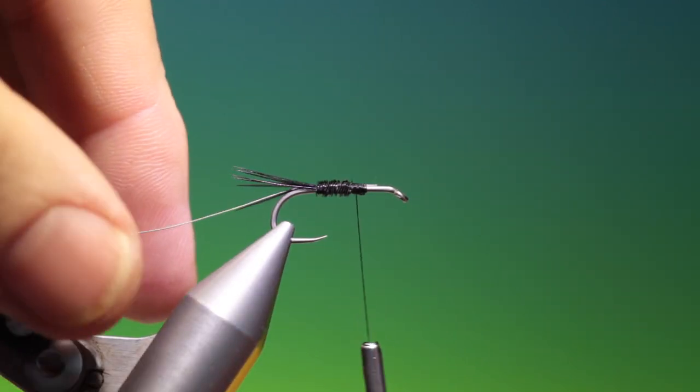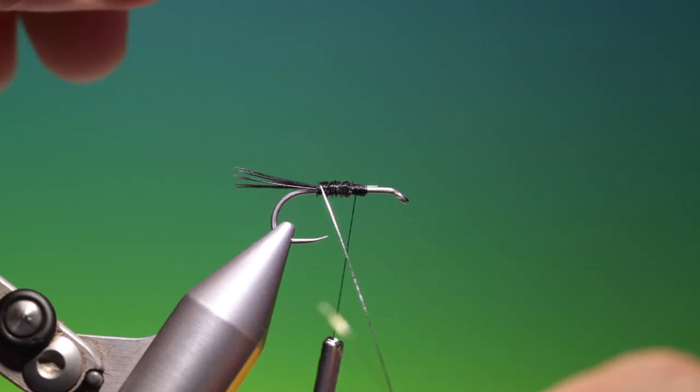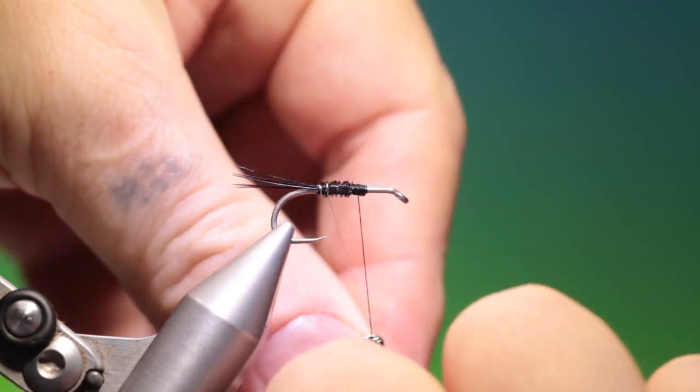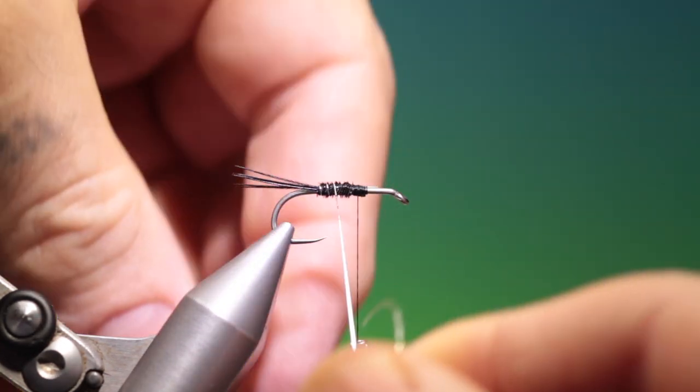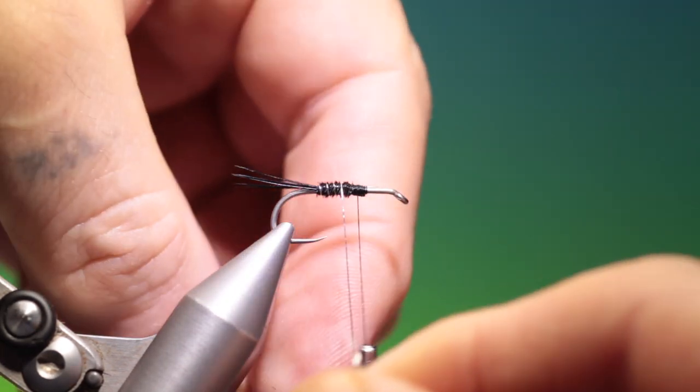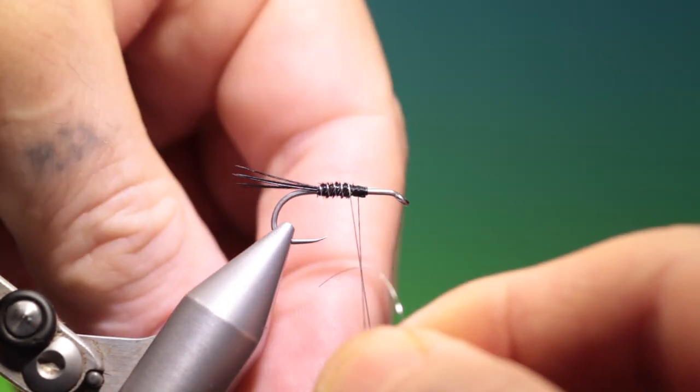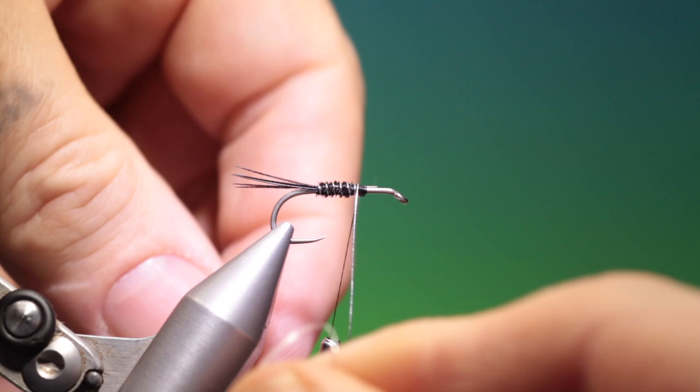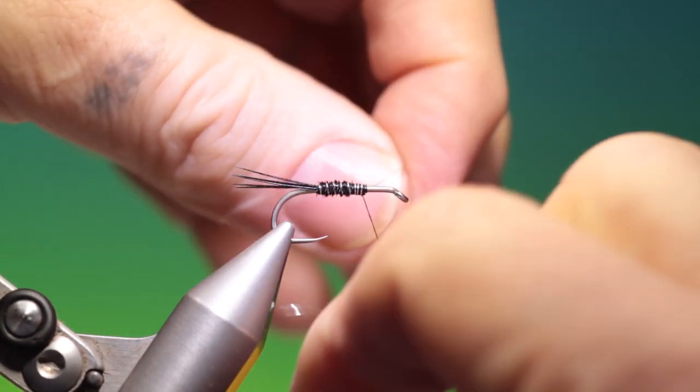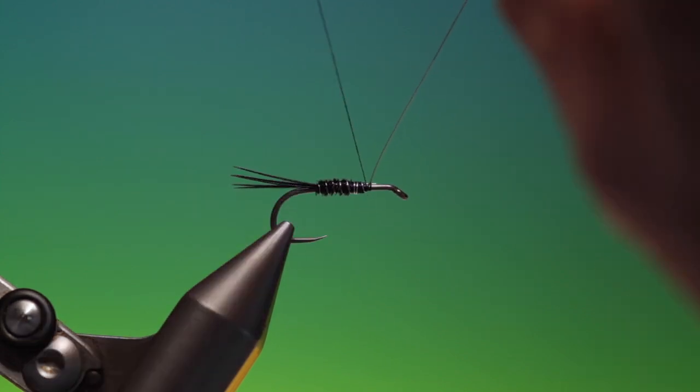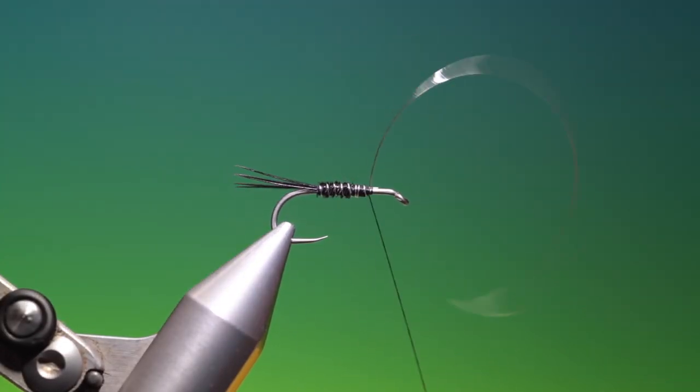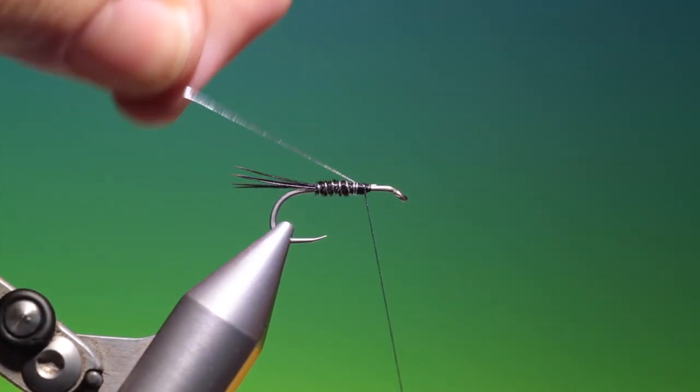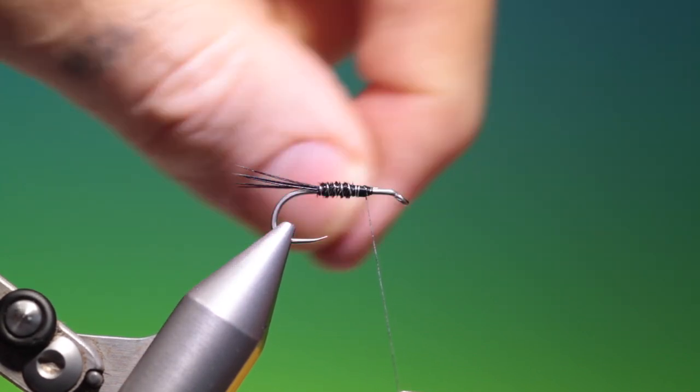Then we want to wind our wire rib in the opposite direction of the pheasant tail. Five or six turns. And then if you want a little extra weight, but this is a very heavy hook, we can go here. And just tie that off. Keep tension on your tying thread while you're removing that with friction.